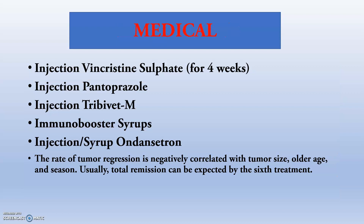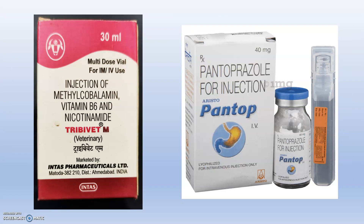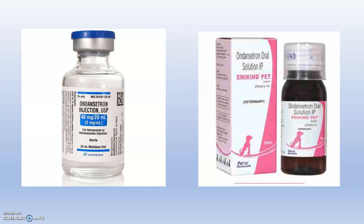For medical or chemotherapy management, we go for injection Vincristine for 4 weeks — every week at the proper dose. Injection Pantoprazole is given because Vincristine has mainly 3 side effects that we must combat. Pantoprazole controls the proton pump inhibitors. Injection Tri-B-Vet-M should be noted, along with immunobooster syrups and injection or syrup of Ondansetron — a 5-HT3 inhibitor — which inhibits the vomiting tendency, while immunoboosters upgrade the immunity. The rate of tumour regression is negatively correlated with tumour size.